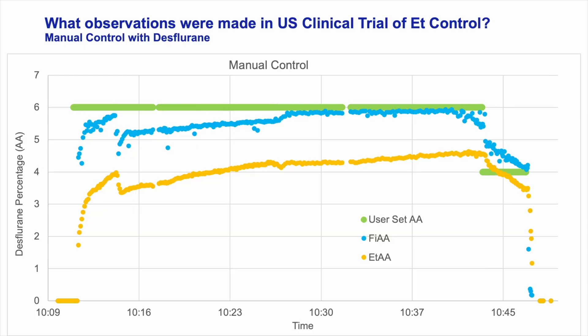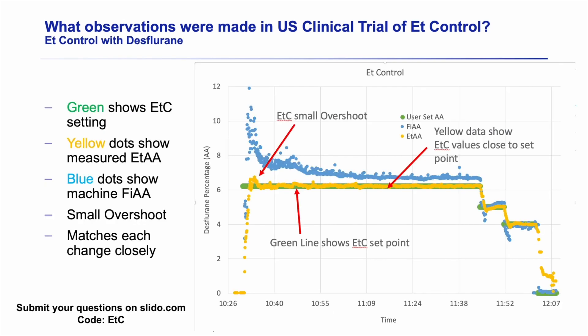Here are a couple of example cases. This first case did not use end-tidal control. The user was trying to get to an end-tidal value of 6% DES — that's the green line. The gold dots show the end-tidal value they actually got: 3.5%, 4%, for the exact reasons of agent cascade that Dr. Kennedy talked about. With end-tidal control, it's a very different story. There is a green line behind that gold line, but you can barely even see it because the measured value is right at your target value the entire time. When they make changes late in the case, very quickly the software reacts and gets you right back to that target value.